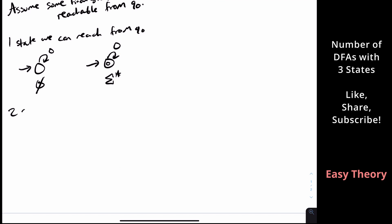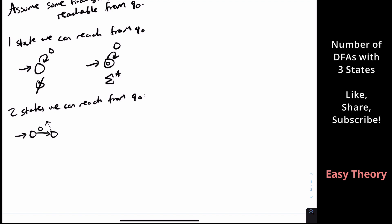Now let's assume we can reach two states from q0. We could have both states be non-final, which means no matter what the transitions do — whether the second state self-loops or goes back to the first — the language is empty, because neither state is final.